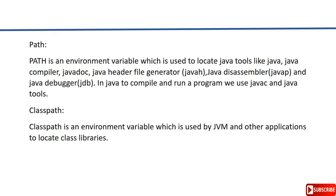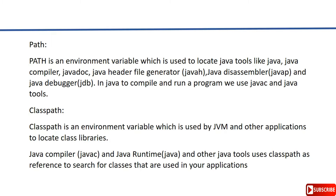If you go to the installation directory, there is a folder called lib and there you can find the rt.jar file, which has all the inbuilt classes that come with JDK. If you extract that, you can find all the inbuilt library classes. The Java compiler, Java runtime, and other Java tools use this CLASSPATH as a reference to search for classes that are used in your application.